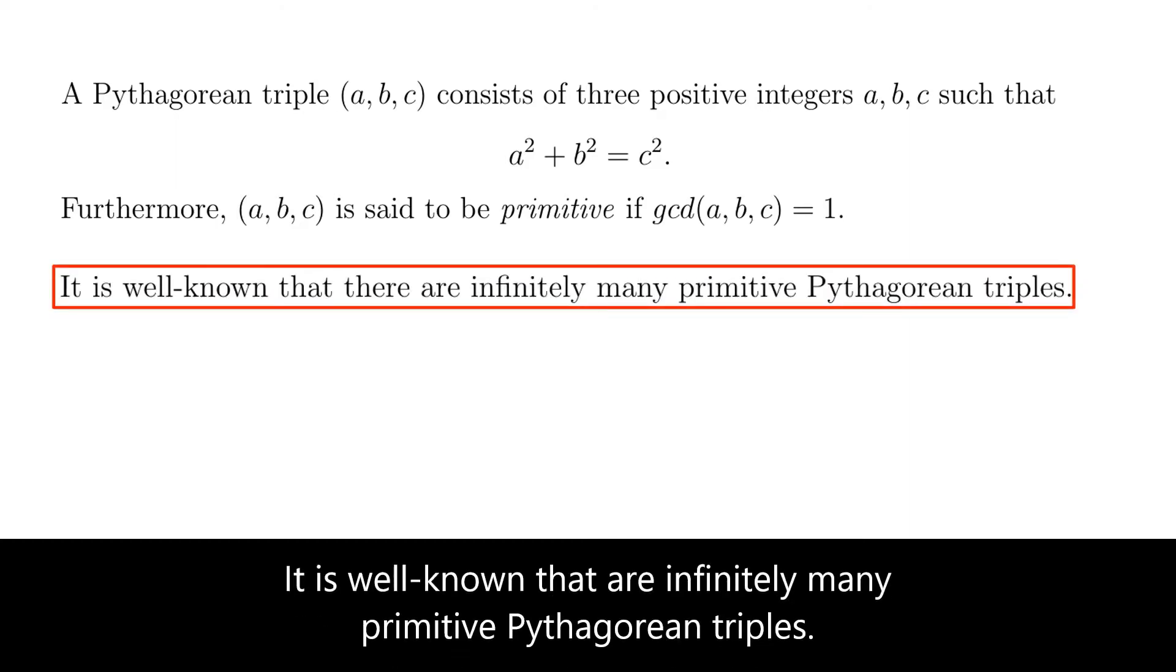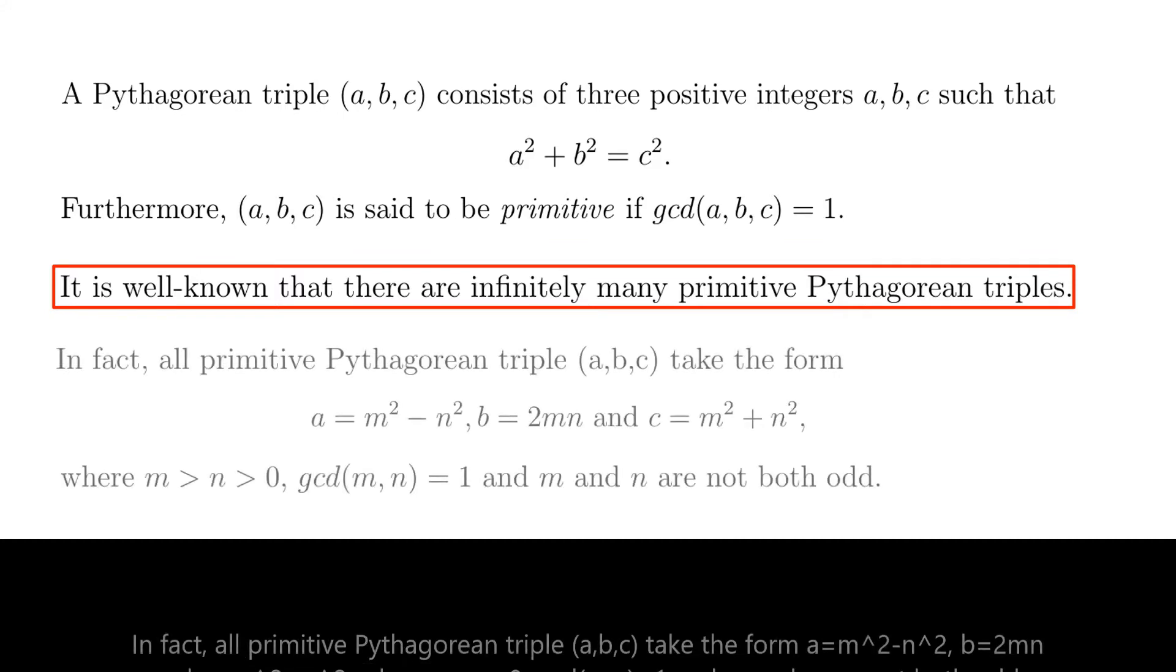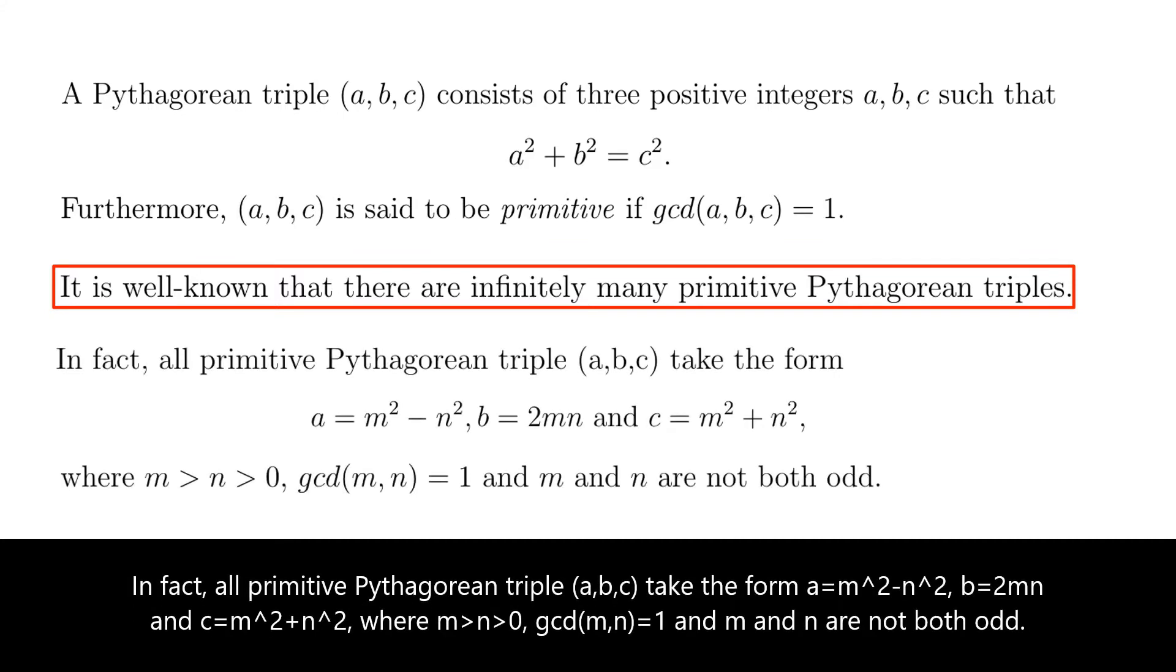It's well known that there are infinitely many primitive Pythagorean triples. In fact, all Pythagorean triple A, B, C take the form A equals M square minus N square, B equals 2 times M times N, and C equals M square plus N square.